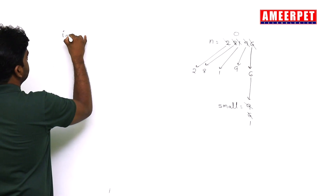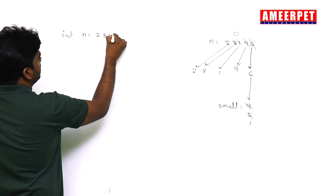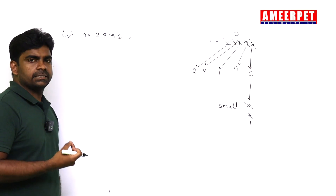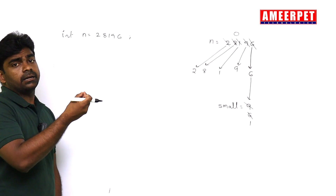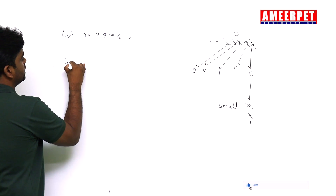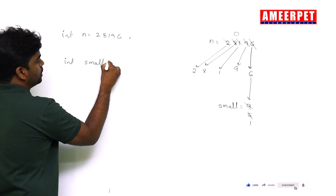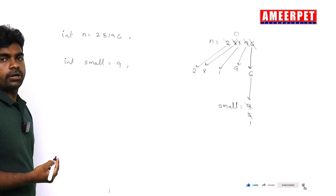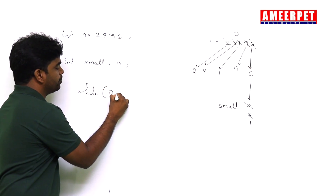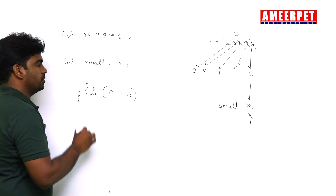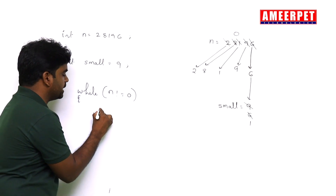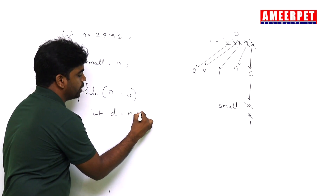Now in the code, I am taking the number: integer N equals 281961, the same number. You can read the number or change it as you wish. Initially I am taking int small equals to 9. Then repeating the loop until the number becomes zero. Inside the loop, getting each digit: integer D equals N mod 10.